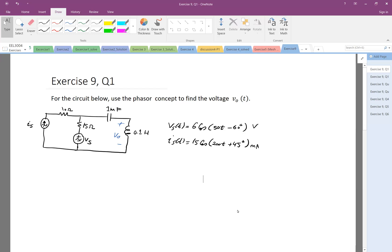Okay, so for the circuit below, use the phasor concept to find the voltage V0, and V0 is the voltage across the inductor. The first thing I will see, we check in the circuit, we look at the sources, and here as we see, the sources have different frequencies.